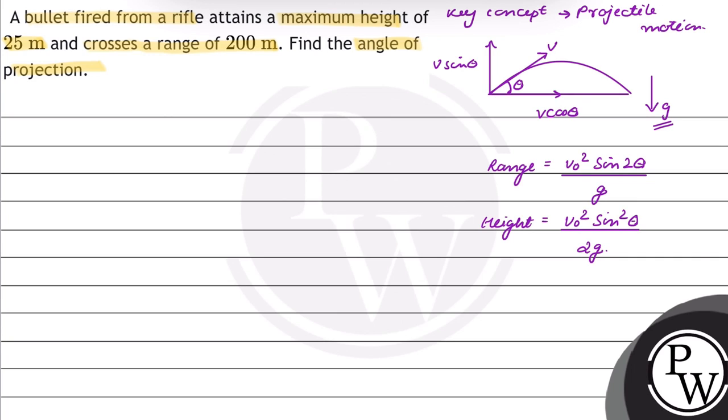This question is given that maximum height h is equal to 25 meters and range is equal to 200 meters. So, from the height formula, 25 equals u square sin square theta by 2 g. And range equals 200 equals u square sin 2 theta by g.